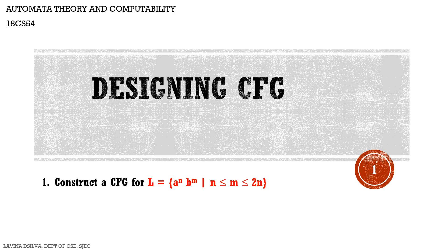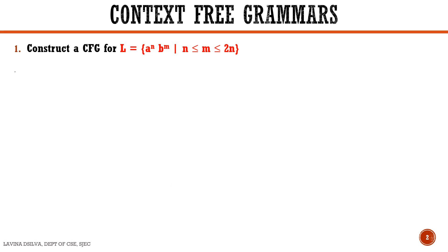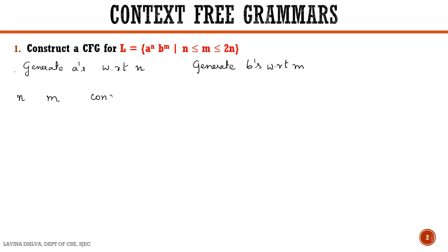So whenever we generate a's we generate them with respect to n, and when we generate b's we generate them with respect to m. Now let us construct or see what are the different types of strings which we can have in this particular language. If we take n and m, we know that our condition is that n should be less than or equal to m, which is less than or equal to 2n.